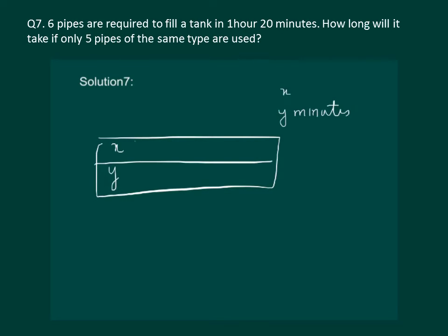Then, we are already given that 6 pipes can fill the tank in 1 hour 20 minutes. 1 hour 20 minutes is same as 60 plus 20 minutes that is equal to 80 minutes. Hence,